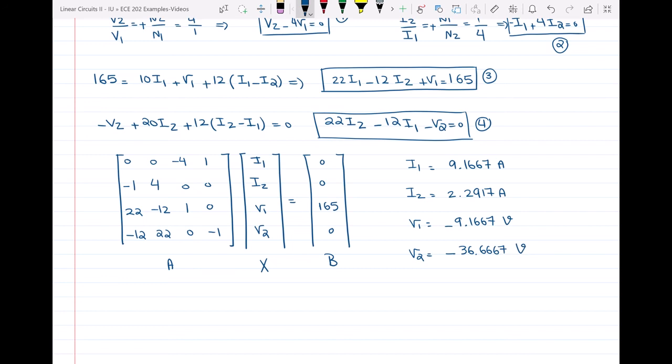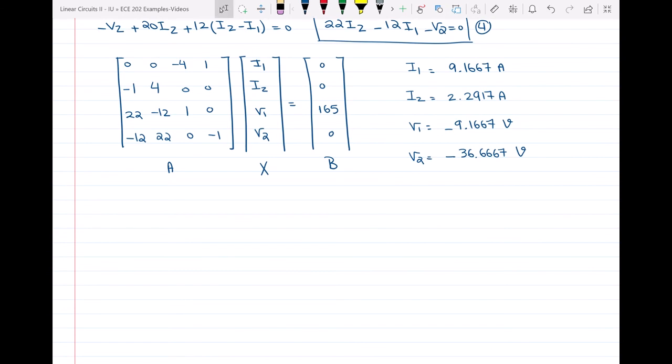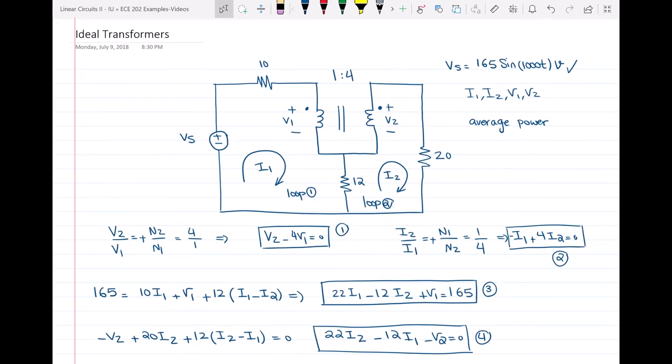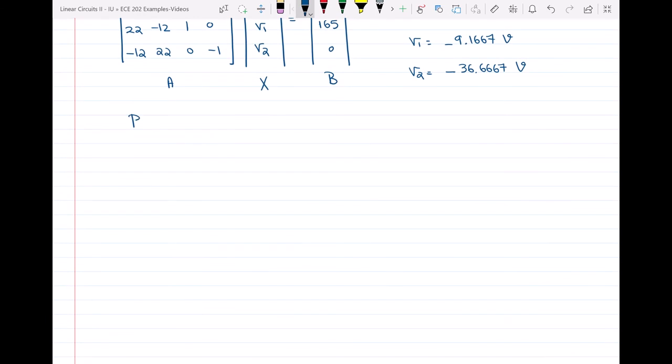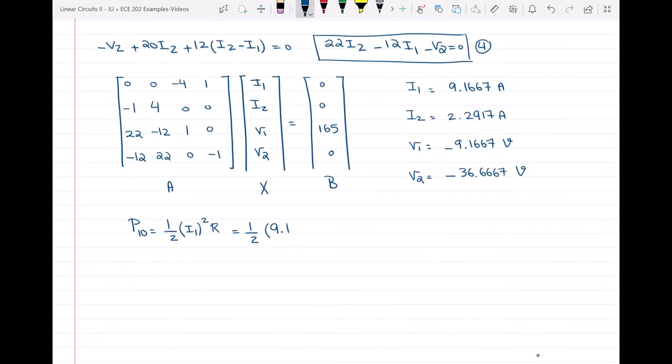Now I can easily figure out the power, the average power being absorbed by each of the resistors. Let's first start with the resistor of 10Ω. You can see clearly that the current passing through this 10Ω resistor is I1. Then my average power for the 10Ω will be P of 10 is going to be half the current passing through that resistor, which is I1 squared multiplied by the resistance. That would be half multiplied by 9.1667 squared multiplied by 10 and that would give us 420.14 watts.